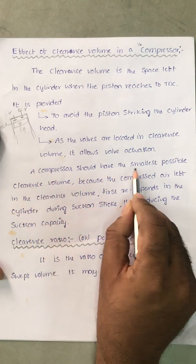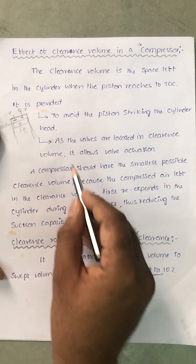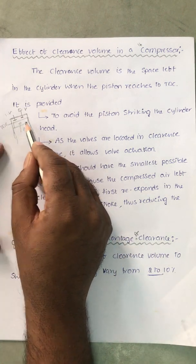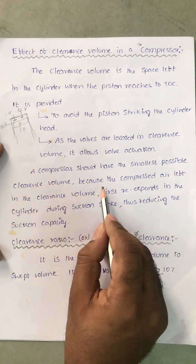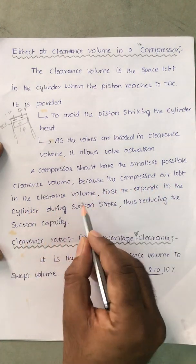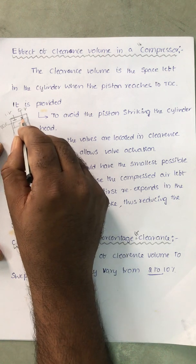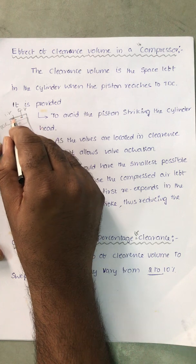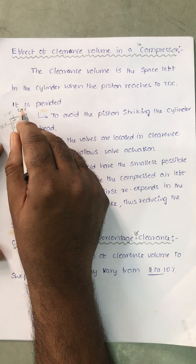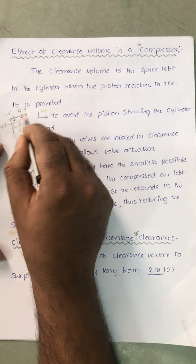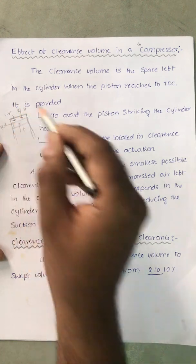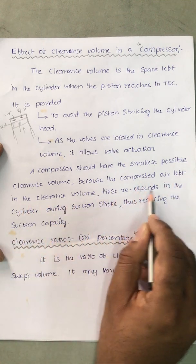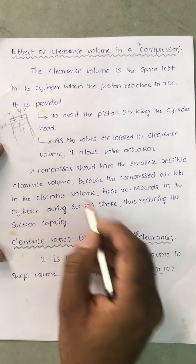A compressor should have the smallest possible clearance volume. We have to provide it, but it should be as small as possible, because the compressed air left in the clearance volume during compression — when the piston reaches TDC, the air inside the clearance volume remains inside even after we open the delivery valve; some amount of air remains in the clearance volume.